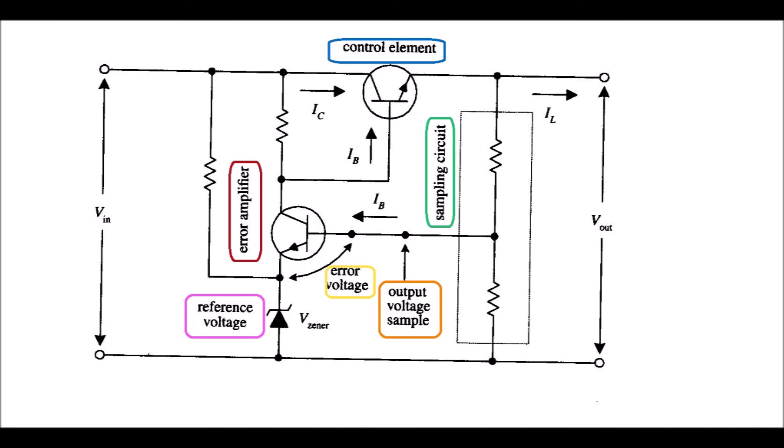The regulator's sampling circuit detects the output voltage and feeds a voltage sample to the error amplifier. The reference voltage element uses a Zener diode to maintain a constant reference voltage which is used by the error amplifier.